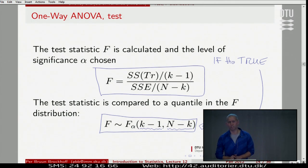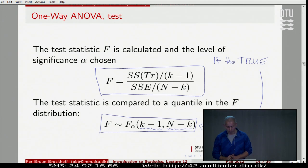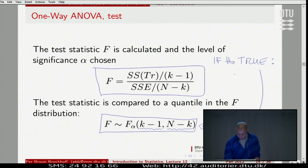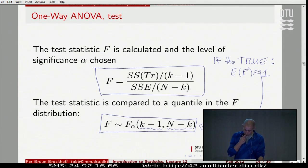Apart from probability theory, there is a feature of this test statistic worth spending a few minutes on before the break, to help understand why it makes good sense to use this statistic. On average, if the null hypothesis H0 is true, we would expect F to be around one. And if F becomes larger than one, it becomes more and more critical for the hypothesis.